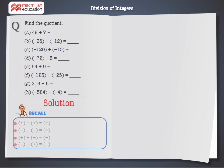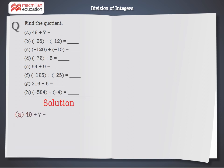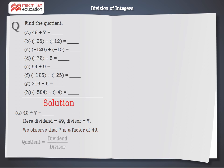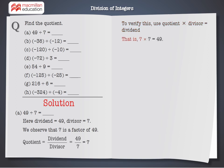Using these facts, we can find the quotient for each problem. A: 49 divided by 7. Here, dividend is equal to 49, divisor is equal to 7. We observe that 7 is a factor of 49. Quotient equals dividend divided by divisor, which is 49 divided by 7, equal to 7. To verify: quotient multiplied by divisor equals dividend — 7 multiplied by 7 is equal to 49. Therefore, quotient is equal to 7.